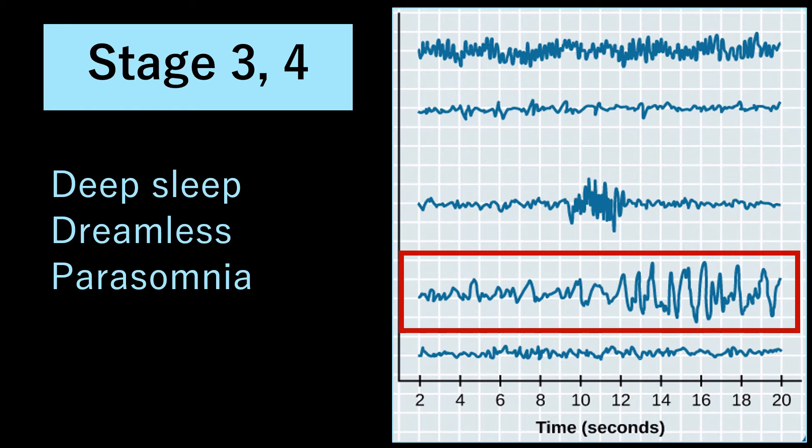Then we have stages three and four, which nowadays are combined into one. This is basically where your deep, dreamless, restorative sleep happens. Although it is generally considered dreamless, it's not always experientially deprived of anything. This is also where they say a lot of parasomnias happen, so stuff like bedwetting, sleepwalking, things of that nature.